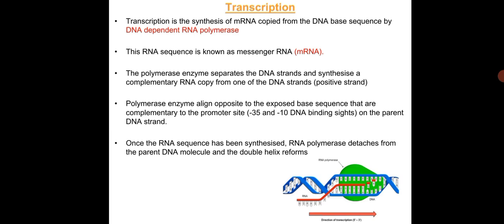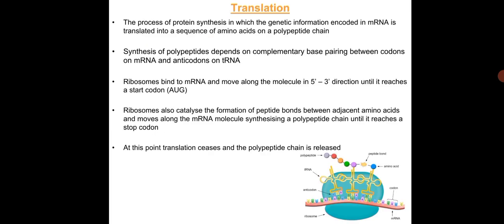mRNA synthesis begins when the RNA polymerase enzyme aligns opposite the exposed base sequence complementary to the promoter site on the parent positive strand DNA. Once mRNA is generated, the RNA polymerase enzyme detaches from the parent DNA molecule and the double helix is reformed.